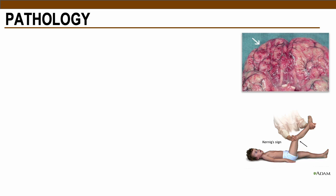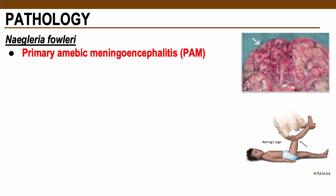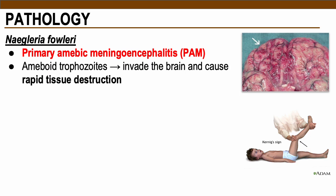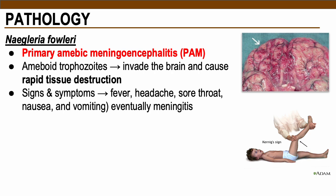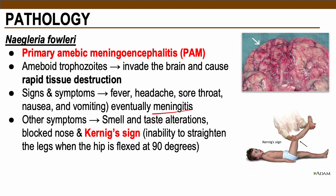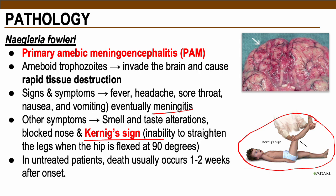Naegleria fowleri causes PAM — Primary Amoebic Meningoencephalitis. This is caused by the amoeboid trophozoite, the infective stage, which invades the brain and causes rapid tissue destruction. Symptoms include fever, headache, sore throat, and in chronic cases, meningitis or inflammation of the brain meninges. Other symptoms include smell and taste alteration, black nose, and Kernig's sign — the inability to straighten the legs when the hip is flexed at a 90-degree angle. In untreated patients, death usually occurs 1–2 weeks after infection.